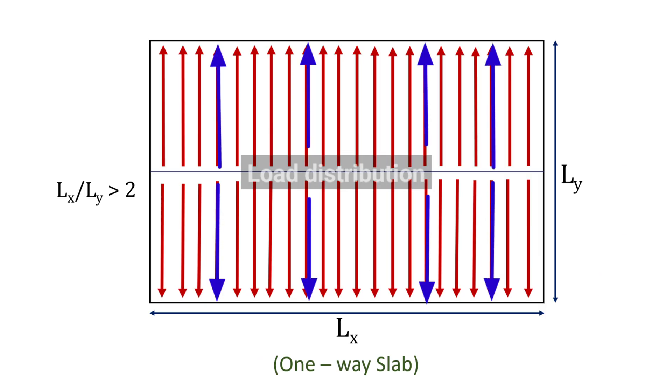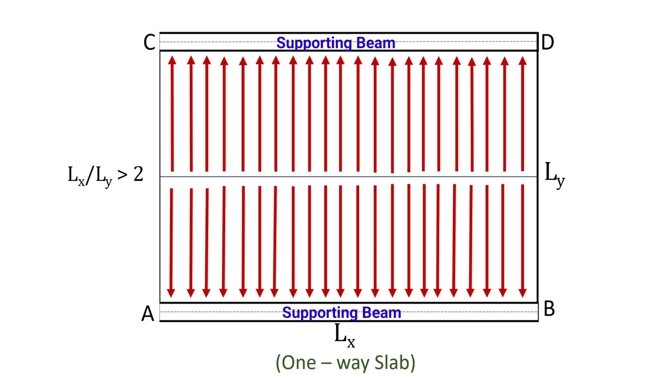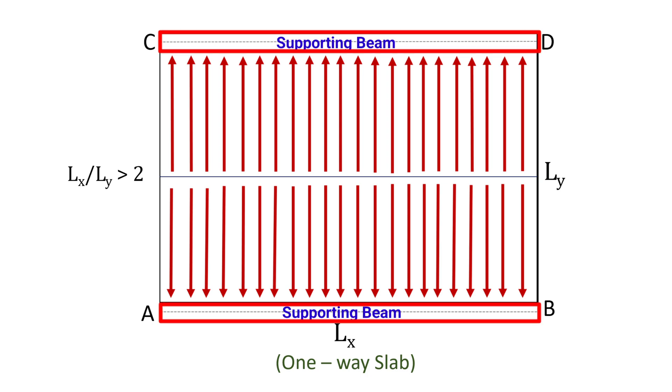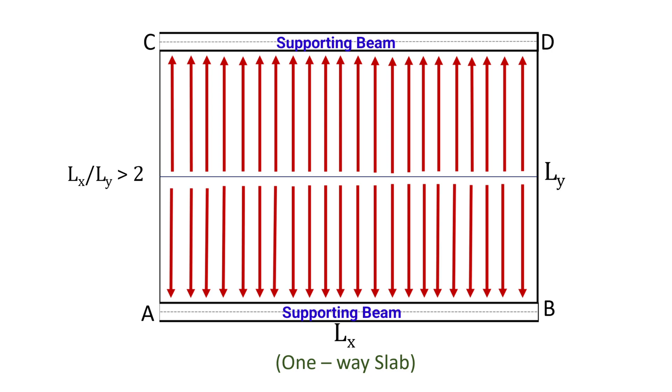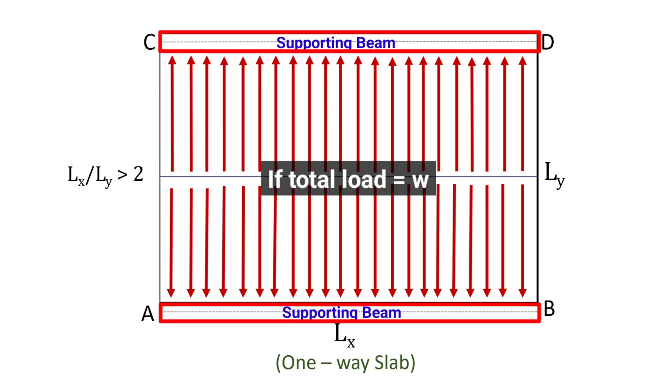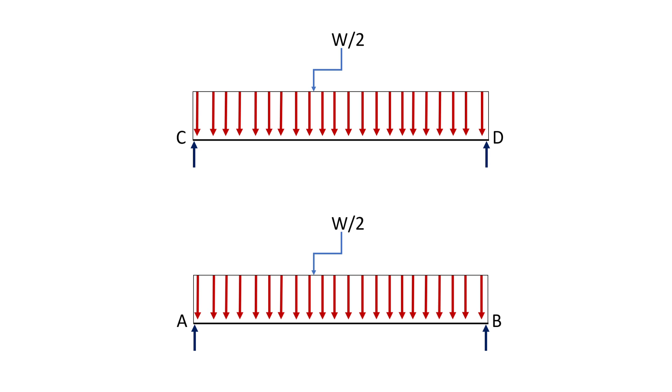In a one-way slab, the loads are carried in one direction only. Therefore, the load distribution takes place in the same direction in a rectangular pattern, as you can visualize from this picture. The loads are carried in the direction perpendicular to the supporting beams or walls in the form of a uniformly distributed load. For illustration, if W is the total load carried by the slab and the slab is supported on two beams, AB and CD, both beams will carry an equal amount of load, that is W/2.